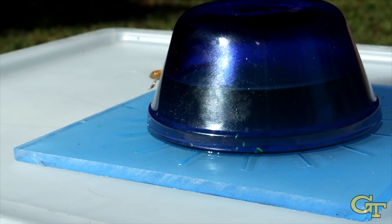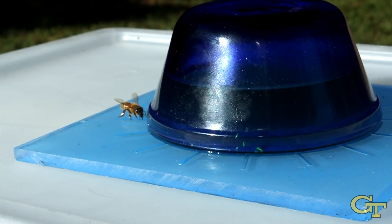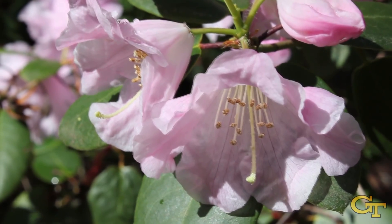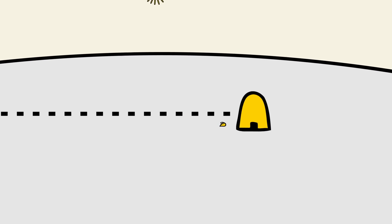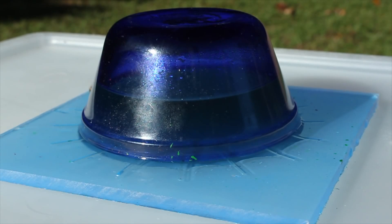A foraging honeybee will eventually discover a new food source, such as a freshly blooming flower or artificial feeder placed by a scientist. After this visit, an interesting thing happens. Over the next few minutes, many other bees arrive at the same location.